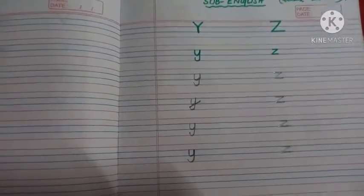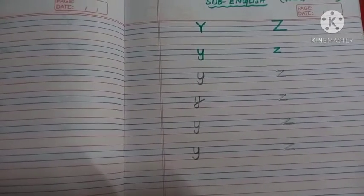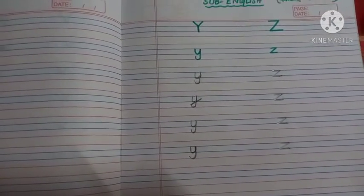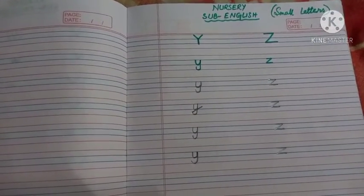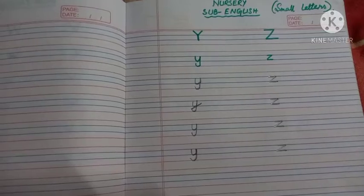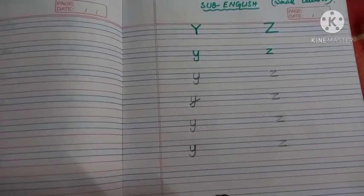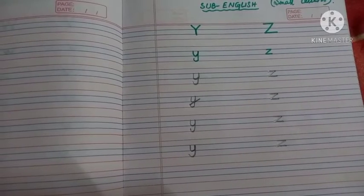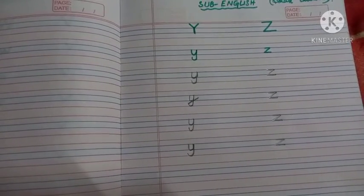So we have finished learning all the small letters, isn't it? And these letters are very easy to write. You have to practice regularly at home, from A to Z — this will be your homework. So practice it at home. See you in the next video. Bye-bye.